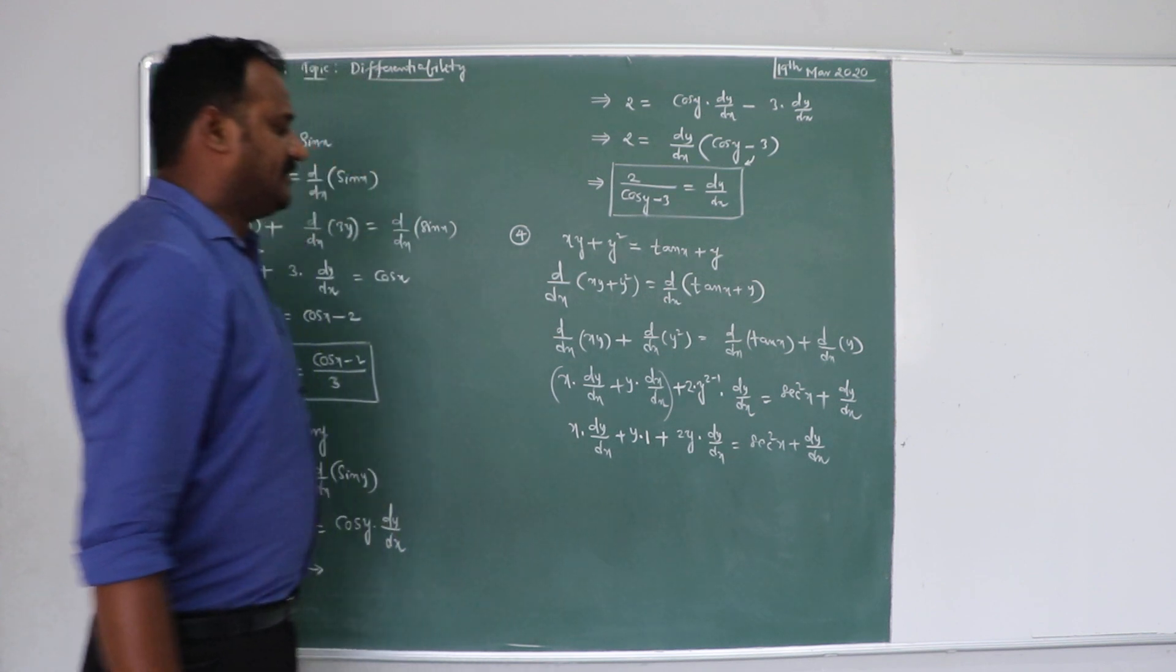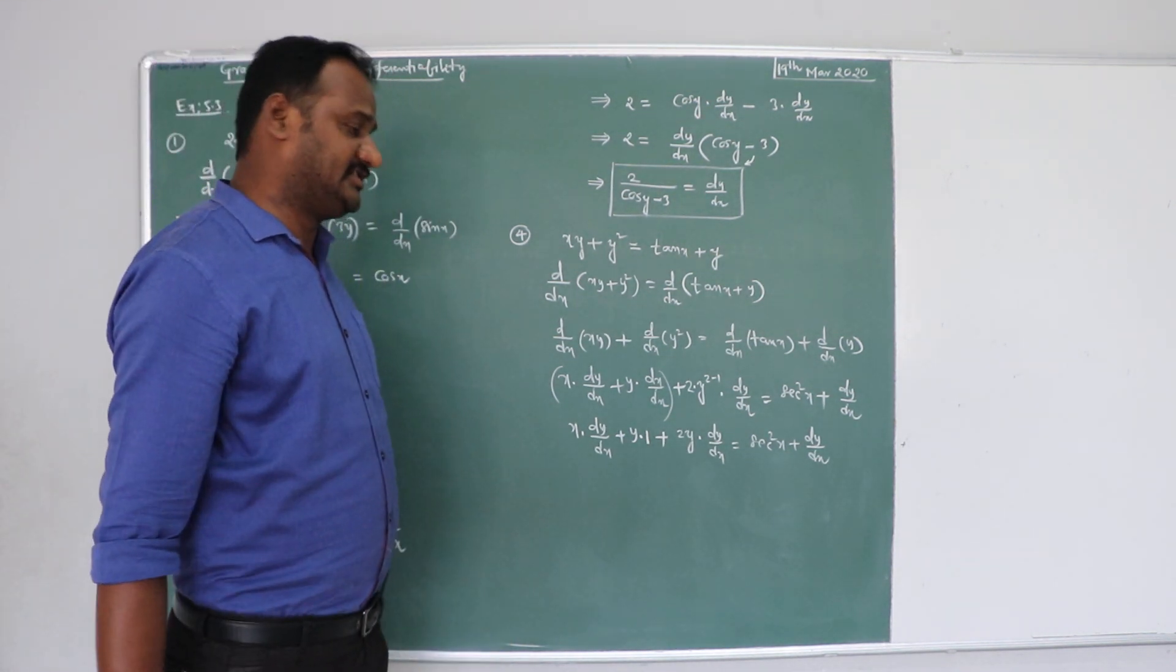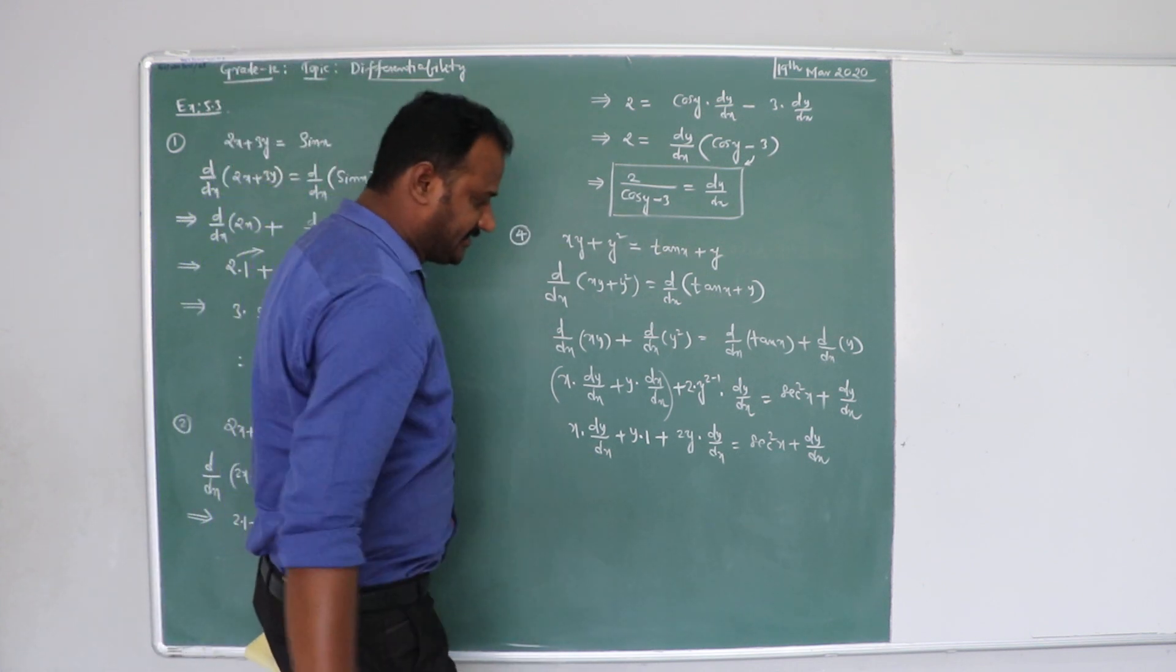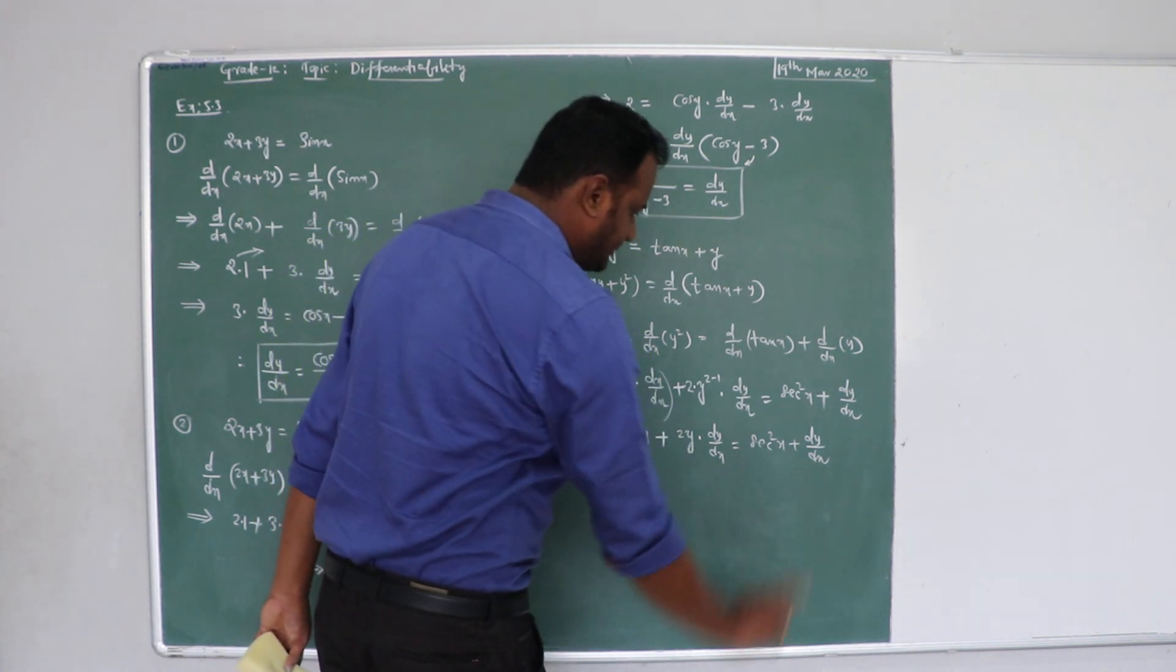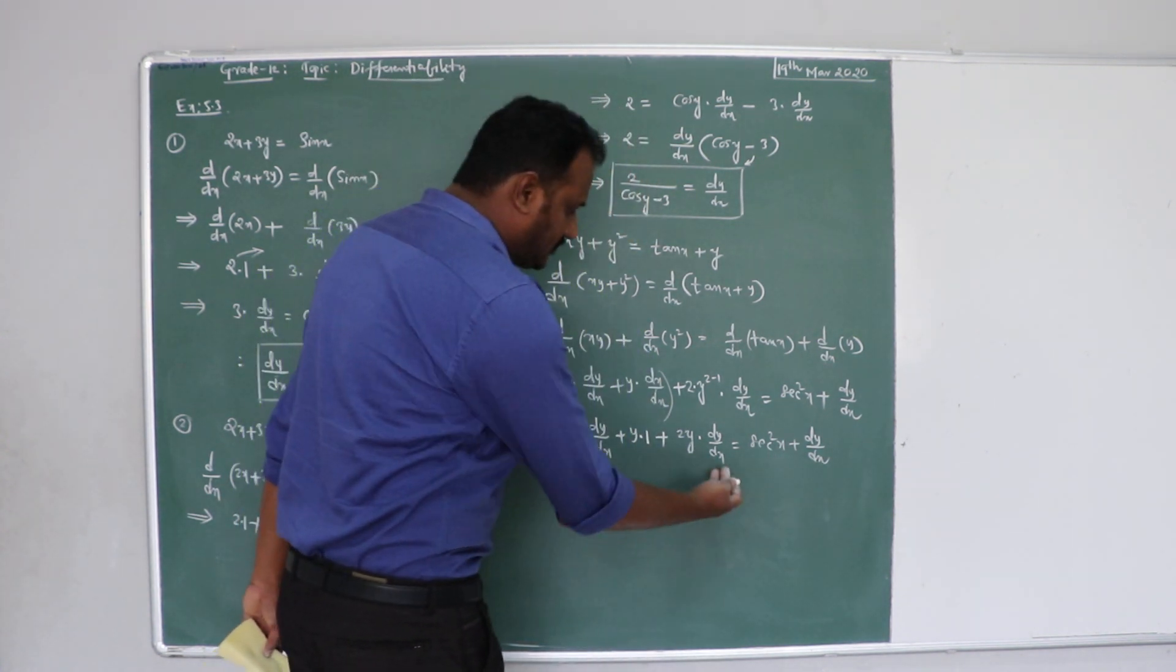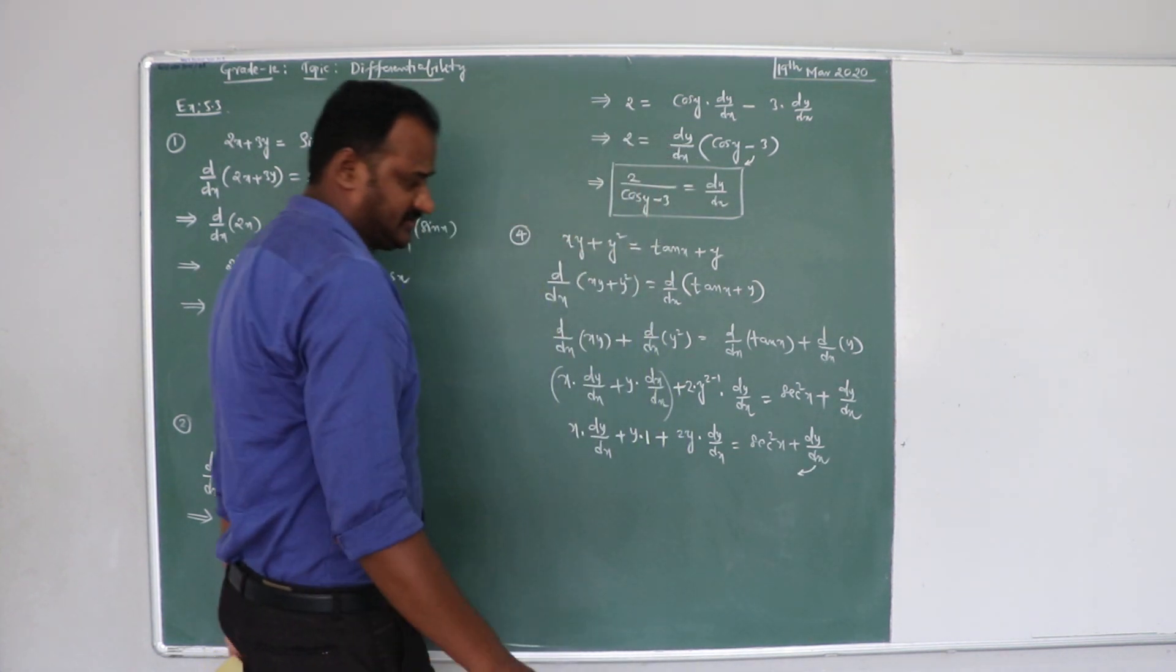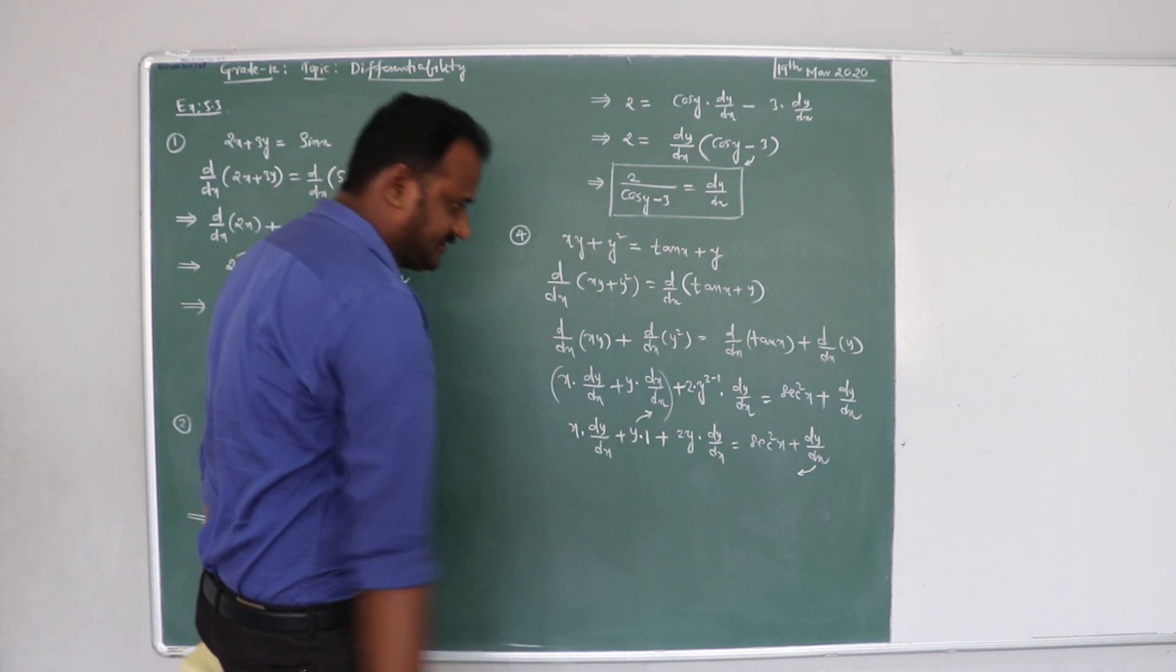So, let us combine all the terms which contains dy by dx, this is the term which has dy by dx, and this is the term which has dy by dx. So, more number of terms are left hand side, so transpose this only dy by dx towards left hand side, this y towards right hand side.